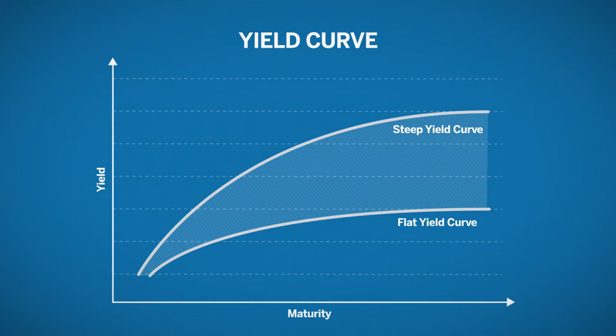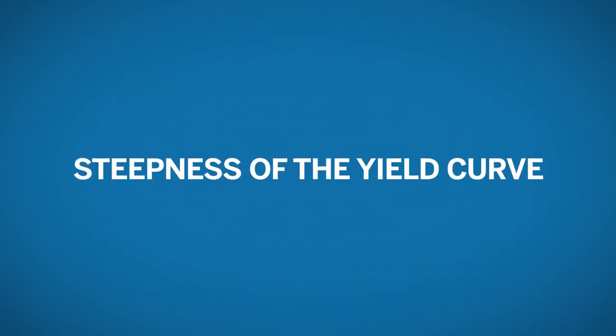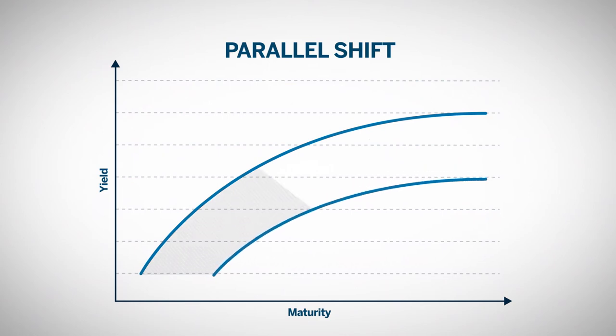This is what is commonly referred to as the steepness of the yield curve. The yield curve can move in two different ways: a parallel shift, where short-term and long-term rates all increase the same amount.